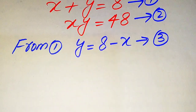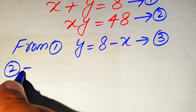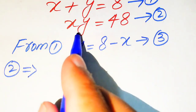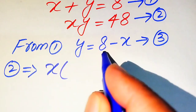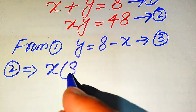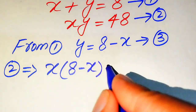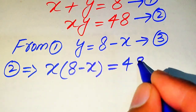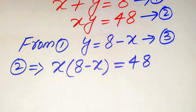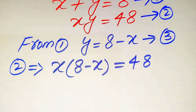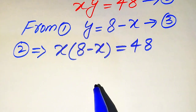Further, in the next step we need to substitute this value of y in equation number 2, so that equation number 2 implies that we have x and y, so the value of y is 8 minus x. We put this value here and it will become x times of 8 minus x is equals to 48. So now our given equations are converted into a single variable, that is x.